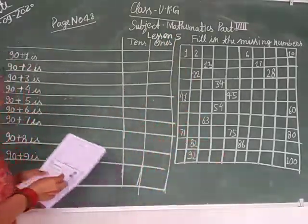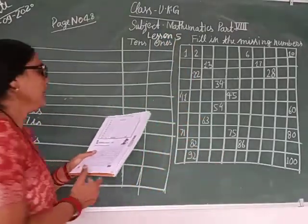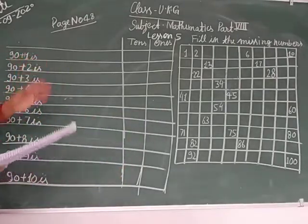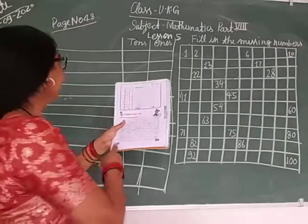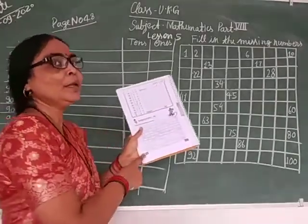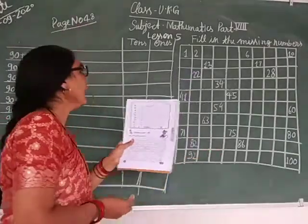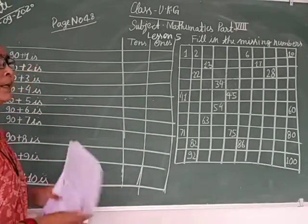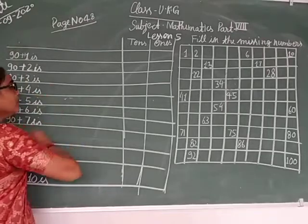90 plus 1 is... Open page number 48. Let's start. 90 plus 1 is 91.